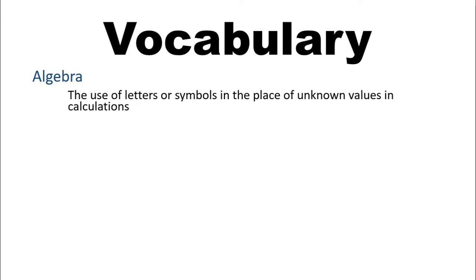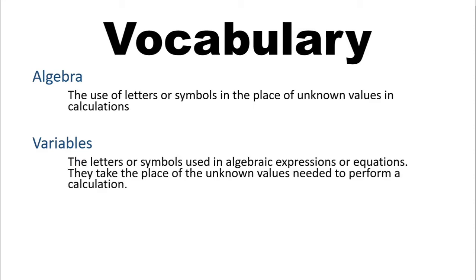Let's start by getting the vocabulary so we can express ourselves, at least in words. First of all, algebra is the use of letters or symbols in the place of unknown values in a calculation. Variables are the letters or symbols that we use in algebra for our expressions or equations. They take the place of the unknown values that we need in order to perform a calculation.